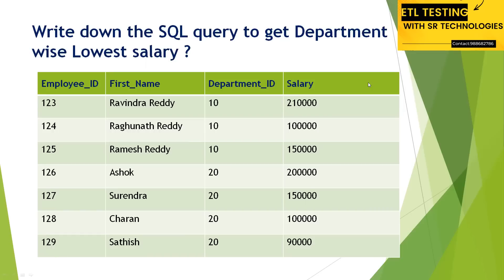If you understand this data, we have four columns in the table: one is employee ID, second is first name, third column is department ID, and fourth is salary.